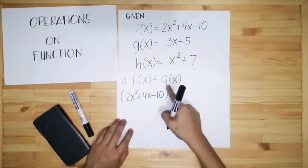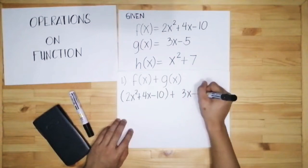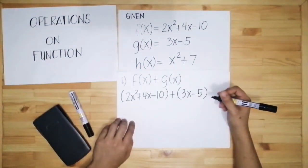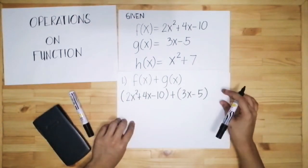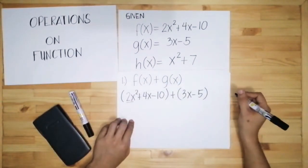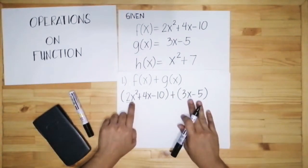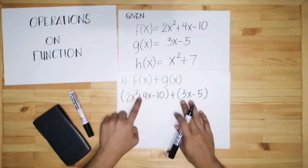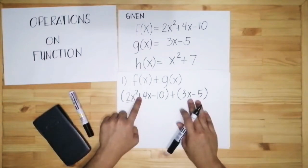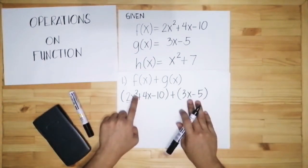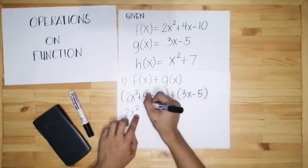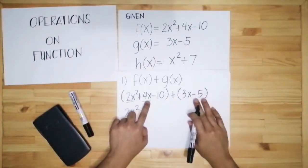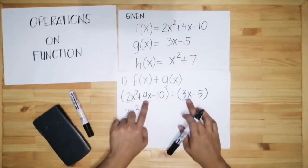Then addition — plus — the g of x, which is 3x minus 5. After substituting the values for f of x and g of x, we have to look for the similar terms. Similar terms must have the same exponent. For 2x squared, we look in the other parenthesis for any term with x squared. There is none, so we just copy 2x squared. Next is 4x — look at the other side for a term with x. We have 3x, so they are similar terms and we add them.